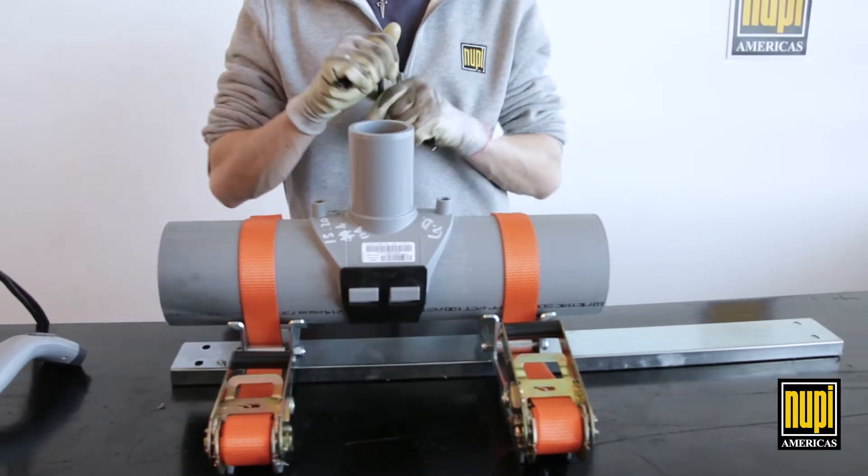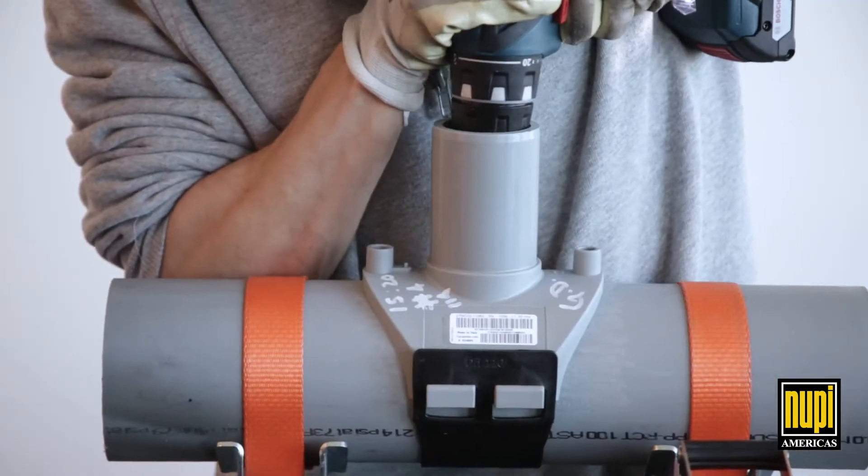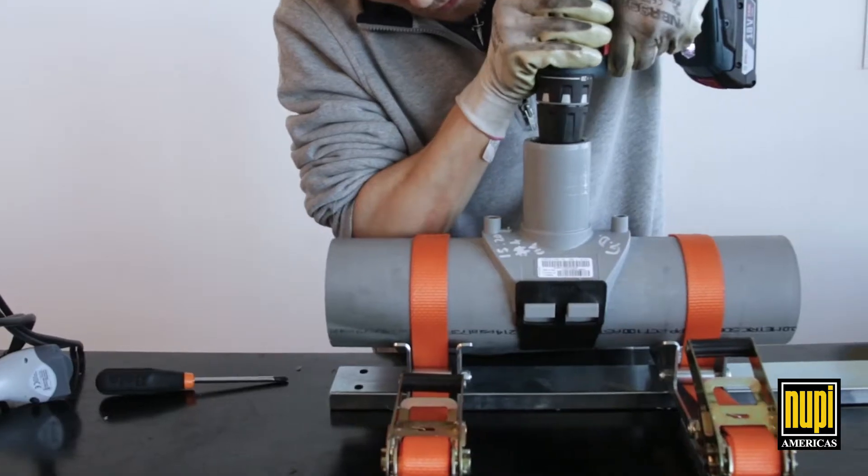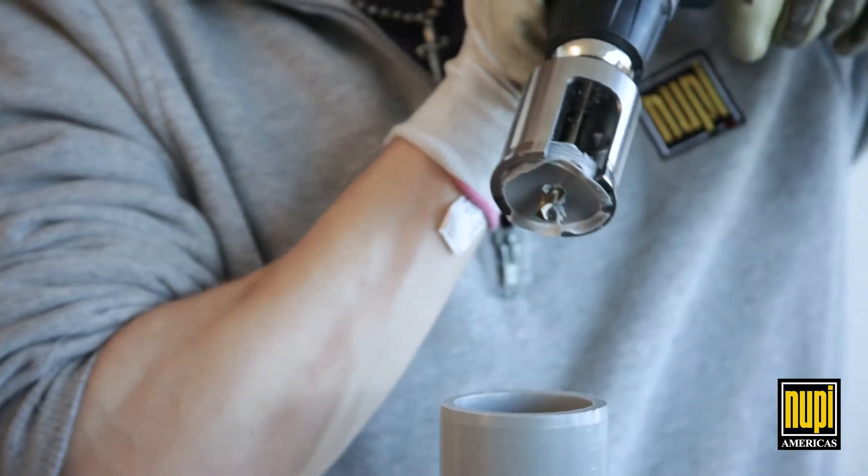Proceed now with drilling the hole using the correct drill bit or hole saw. Never perforate the pipe before completing the welding process.